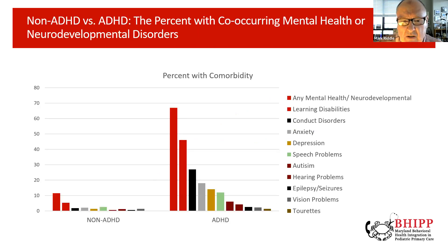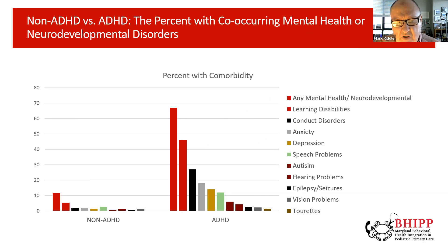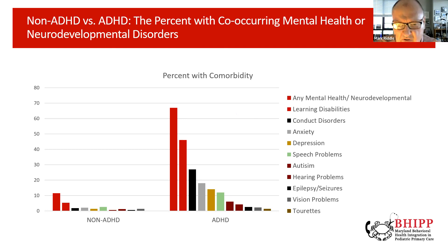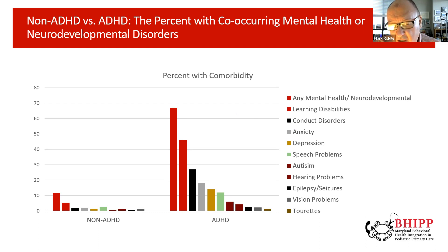What about comorbidity with other disorders? For kids who don't have ADHD, the percentage with various disorders is very low. But children with ADHD show substantially elevated rates of learning disabilities, conduct disorders, anxiety, depression, speech problems, autism, hearing problems, epilepsy and seizures, vision problems, and Tourette's syndrome.